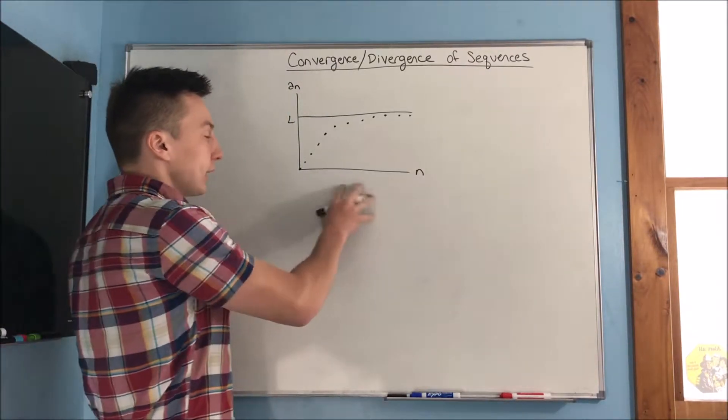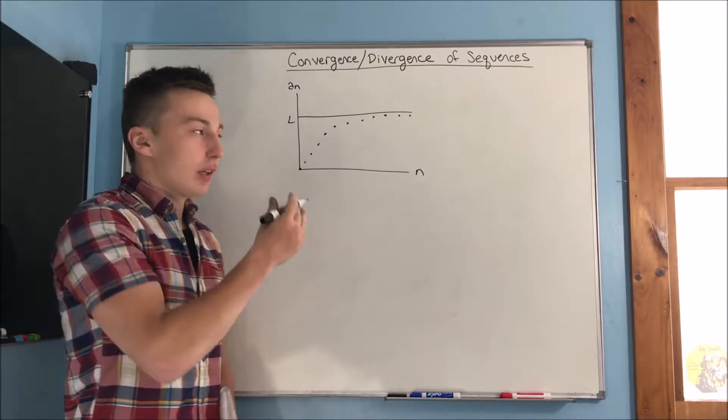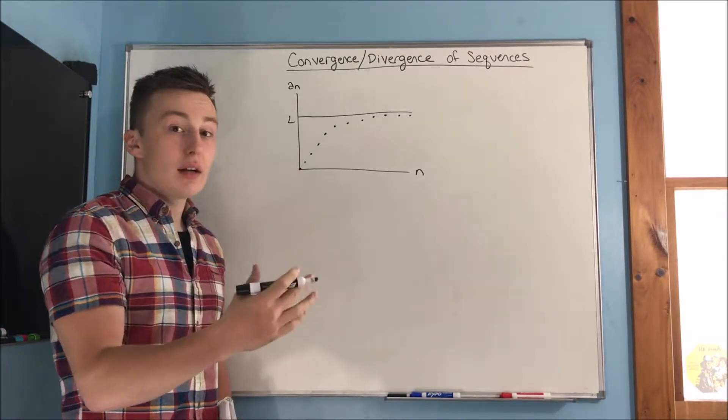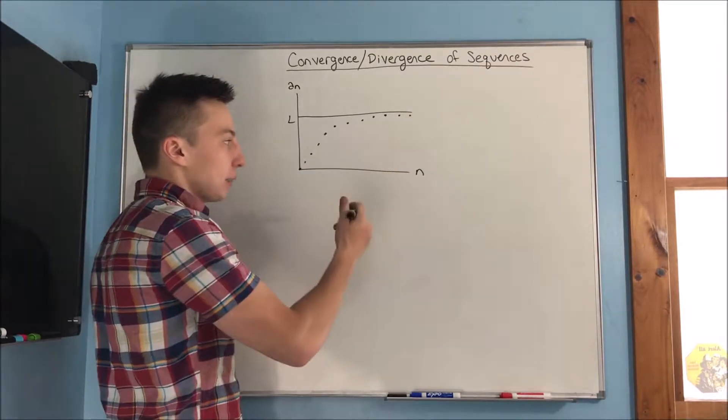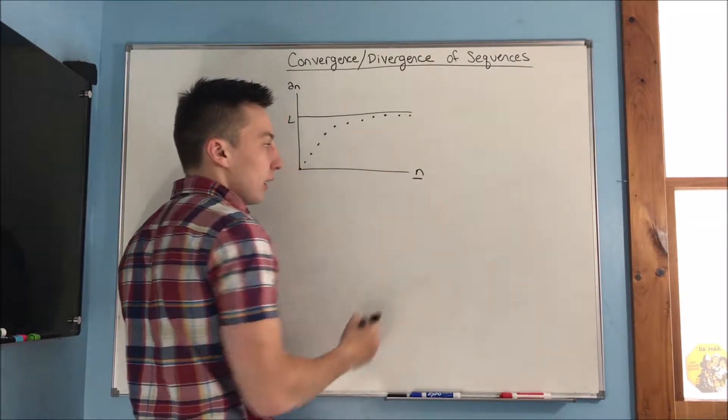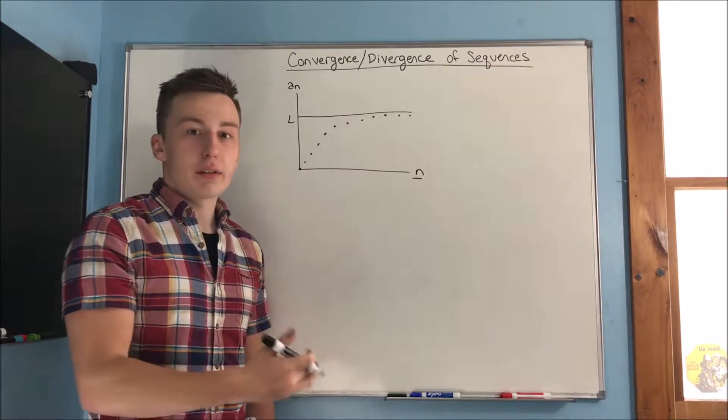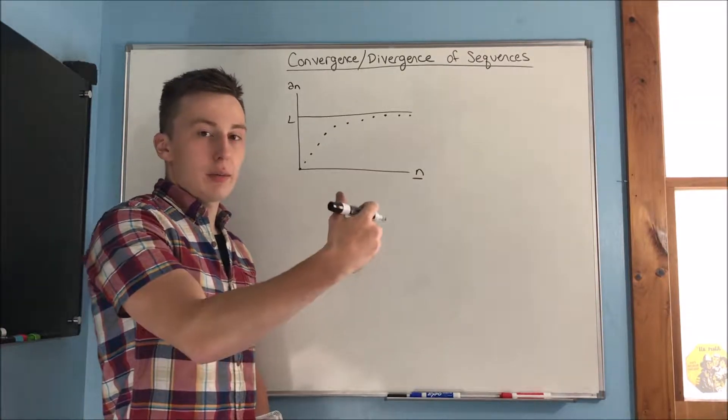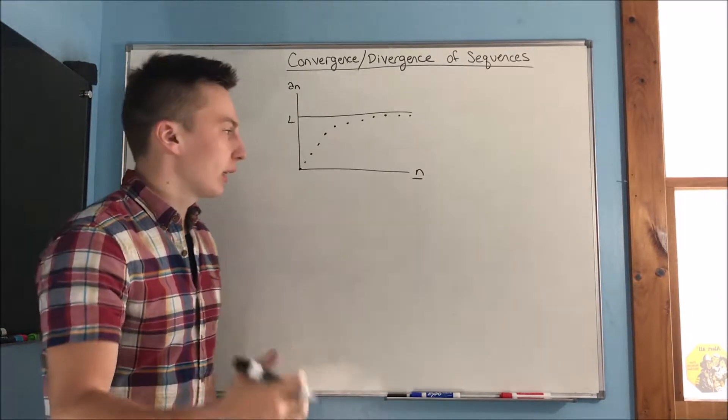So what's different here? Well, instead of dealing with a connected line, we have dots. And that's because the n can only be an integer. You can only have a first, second term, third term, fourth, you can't have a 4.5th term. That doesn't make sense.